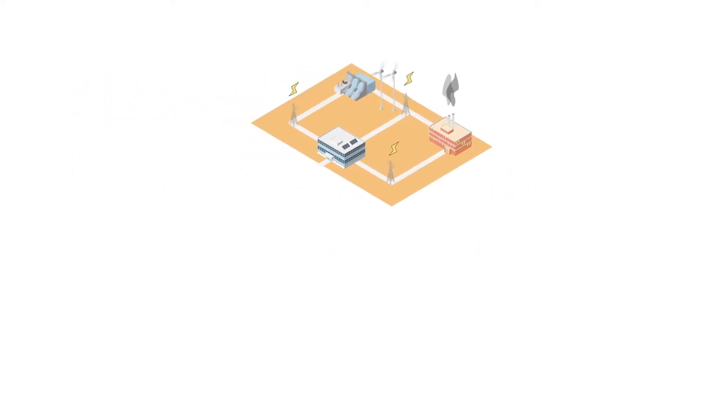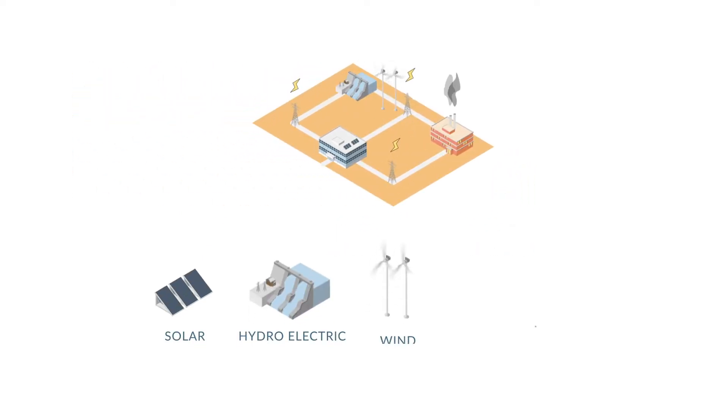Some different types of energy production that feed the grid are solar, hydroelectric, wind, coal, and natural gas.